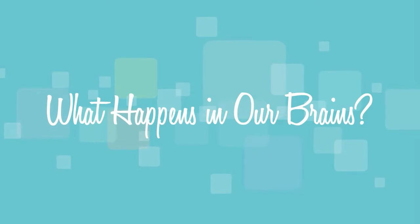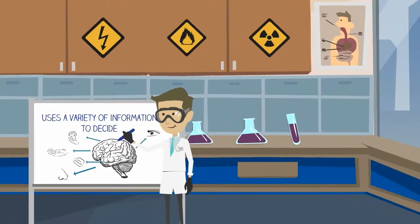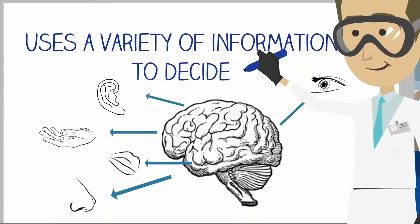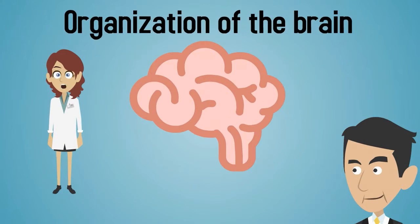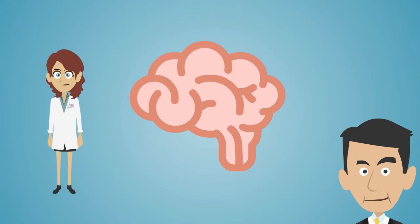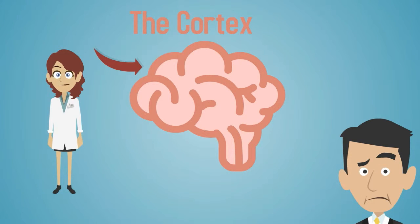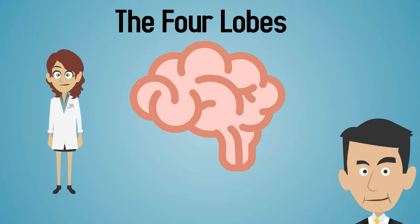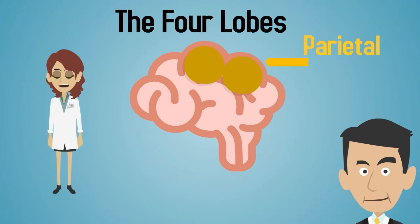What happens in our brains? Current research suggests that the brain considers various sources of information before making a decision. By dissecting the organization of the brain, we can see the mechanisms that occur during decision-making. The outer part of the brain is known as the cortex, which is identified by its wrinkly texture. This is the largest part of the brain and it is associated with higher order functions such as decision-making and thought processing. The cortex is divided into four sections called lobes.